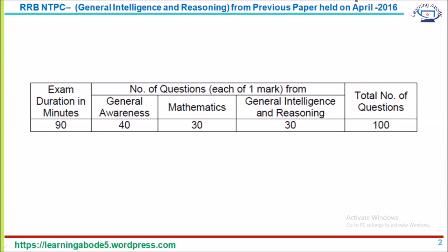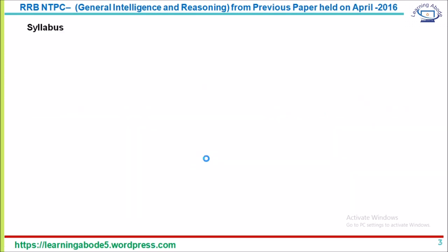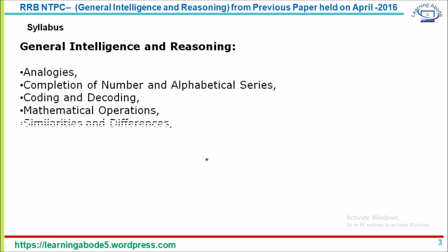Now before I go to the questions, this is the pattern for the first stage computer-based test: total of 100 questions, one and a half hours (90 minutes) duration. General Awareness: 40 questions, Mathematics: 30, and General Intelligence and Reasoning: 30 questions. I have taken 33 questions as maths questions and 26 as the reasoning questions — I will be solving the 26 reasoning questions in this video. There is a negative mark of minus one-third for every wrong answer — please keep that in mind.